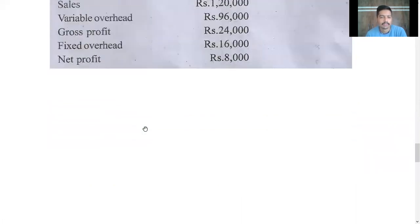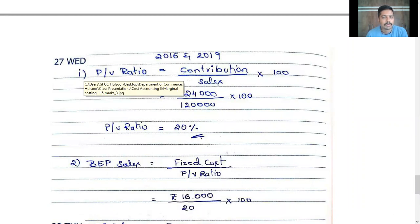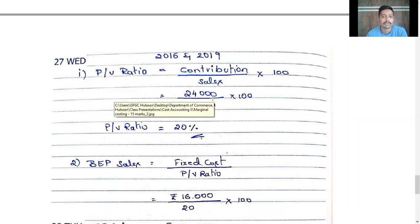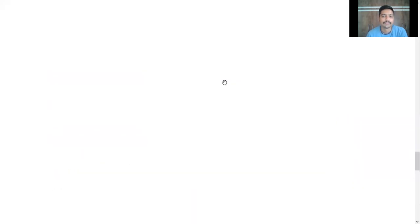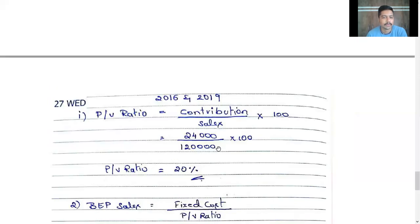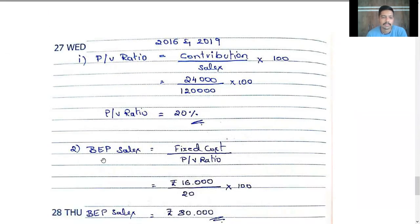Let's go to the answers. First one — PV ratio. PV ratio is equal to contribution divided by sales into 100. Contribution is 24,000 and sales is 1,20,000, so we get 20% as the PV ratio — profit volume ratio.